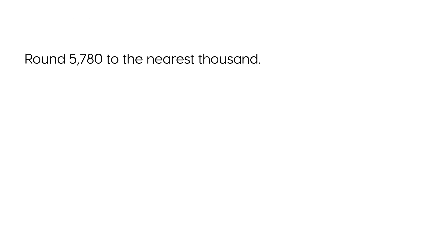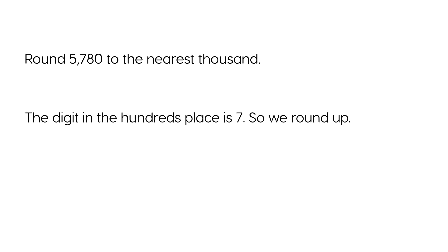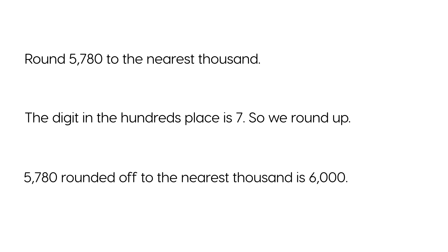Round 5,780 to the nearest thousand. The digit in the hundreds place is 7, so we round up. 5,780 rounded off to the nearest thousand is 6,000.